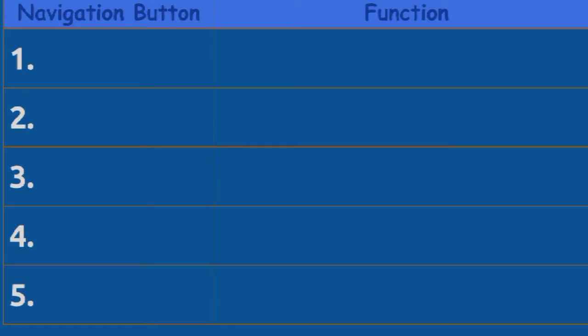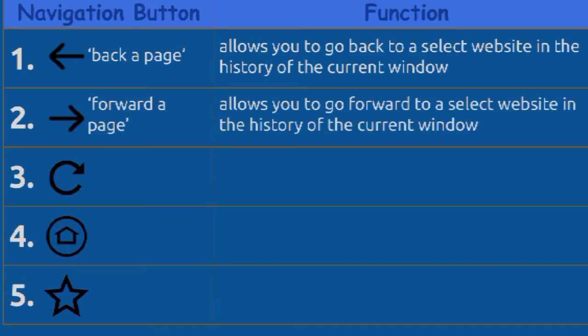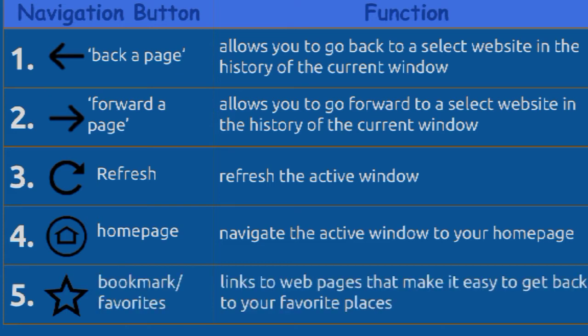Now, let's identify the navigation buttons and their functions. First, the Back button allows you to go back to a selected website in the history of the current window. The Forward button allows you to go forward to a selected website in the history of the current window. Refresh refreshes the active window. Home page navigates the active window to your home page. And then, Bookmark or Favorites — links to web pages that make it easy to get back to your favorite places.